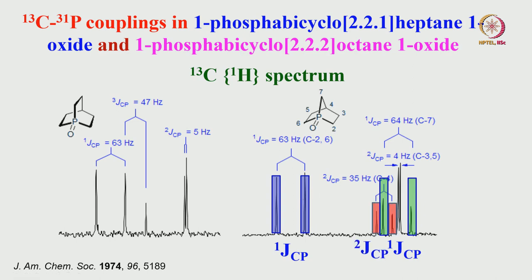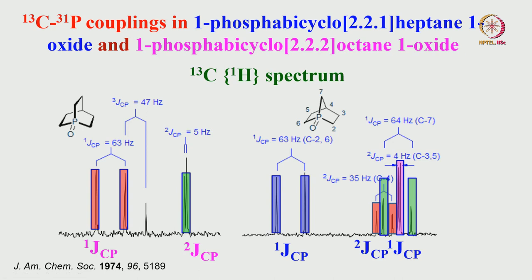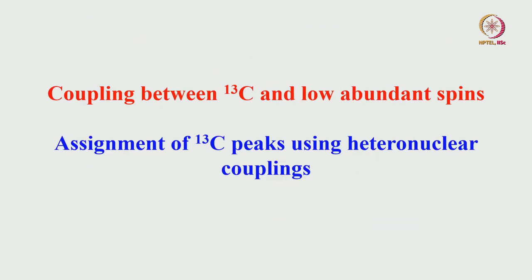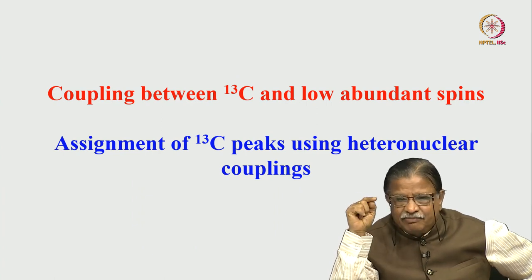The next peak shows a two-bond coupling with carbon-4, and there is another coupling with carbons-3 and 5—again two-bond coupling. Each carbon peak is a doublet because of its coupling with phosphorus. Very easily you can assign and extract coupling information by proton decoupling. If there was no decoupling, this would be a very complex spectrum. For the second molecule, the one-bond coupling is of similar order—64 Hz—with one-bond, two-bond, and three-bond couplings all measurable.